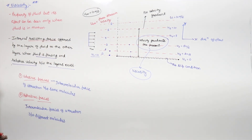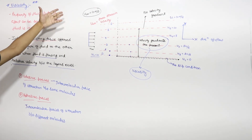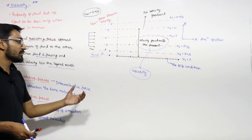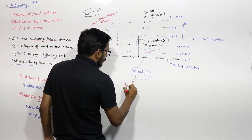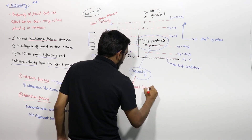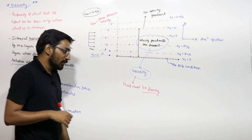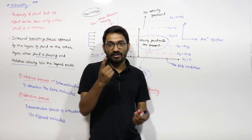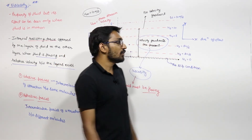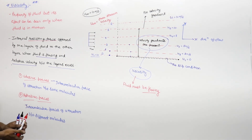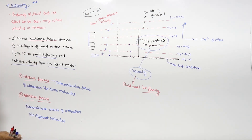Viscosity will be present if there is a velocity gradient and relative velocity between different layers of fluid. Because of cohesive forces of attraction, the internal resisting force is offered by one layer to another, and this property is known as viscosity. For viscosity, the fluid must be flowing. If there is no flow, there is no viscosity. And for flow, the prerequisite is shear stress — if there is no shear stress, there is no flow, and hence no viscosity.